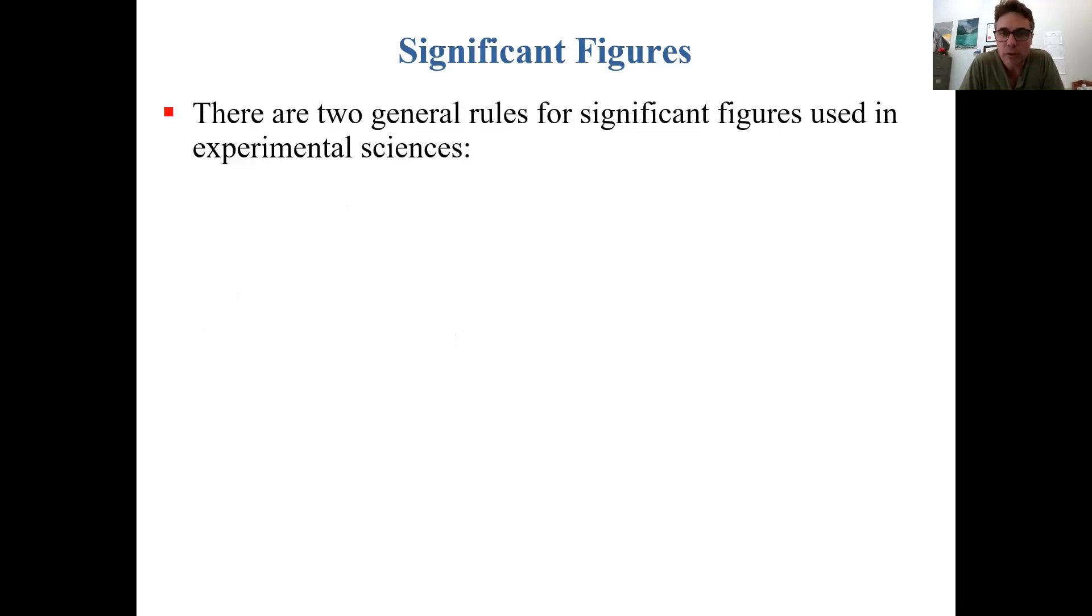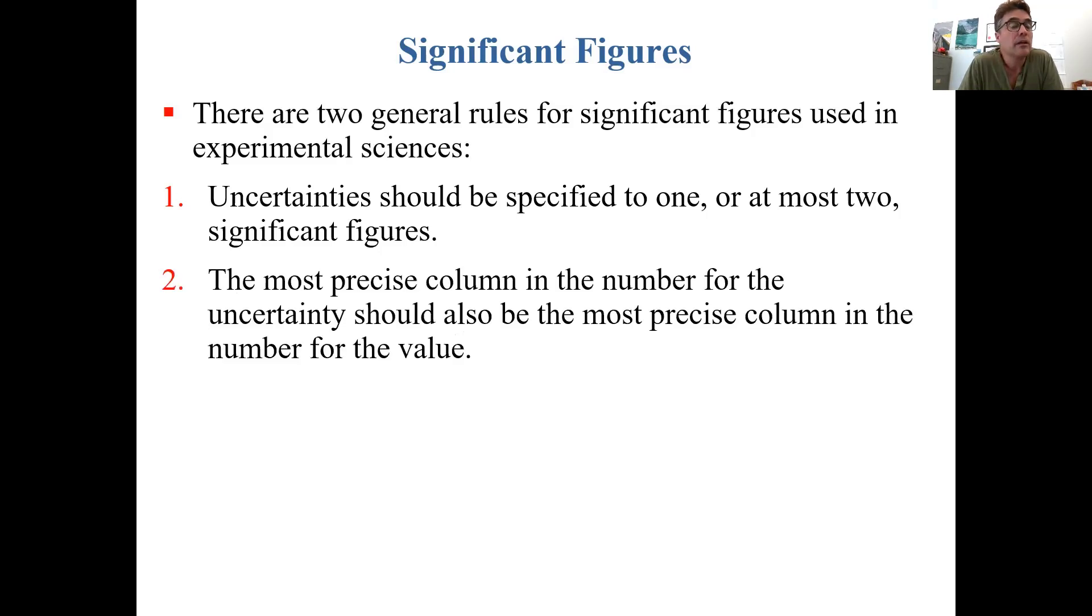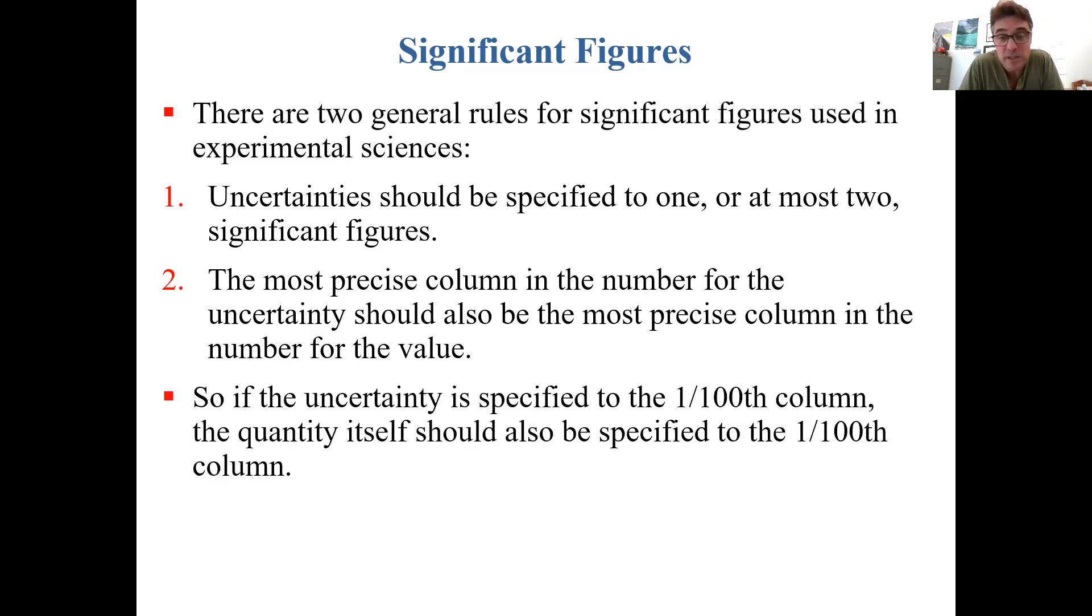There are two general rules for significant figures used in experimental sciences. Rule number one is that uncertainties should be specified to one or at most two significant figures. The second rule is that the most precise column in the number for the uncertainty should also be the most precise column in the number for the value. So if the uncertainty is specified to the 100th column, then the quantity itself should also be specified to the 100th column.